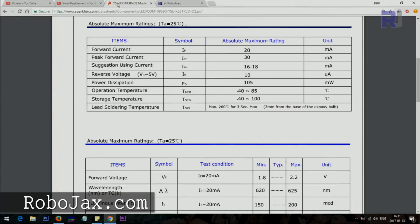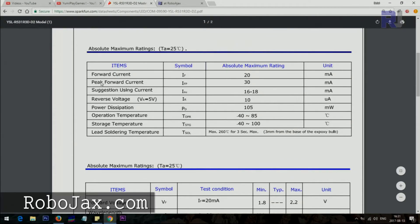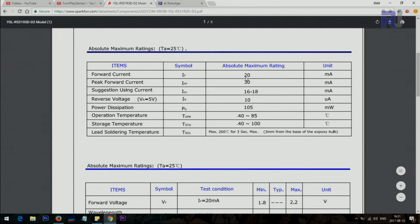Here are specs that I'm showing you. For example here it says forward current, IF. I refers to the current, F refers to forward, so that's 20 milliampere. And then peak forward, the maximum that it can handle is 30 milliampere, so I suggest using current between 16 to 18 and all these other parameters.